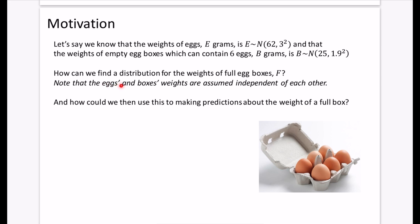Now, I've said here, note that the eggs and boxes weights are assumed to be independent of each other. So we're assuming that, you know, if you have one small egg, it doesn't suddenly mean that they're all going to be small eggs because maybe they're from a particular chicken or that the box, the machine is maybe making particularly bad boxes or something like that. So we always assume that they are independent for this. And so then we would also, after having found this distribution for the weights of full egg boxes, we try and think how could we use this to make predictions about the weight of a full box?